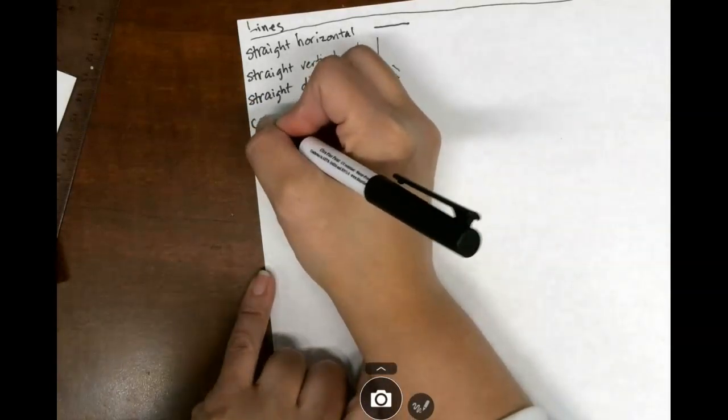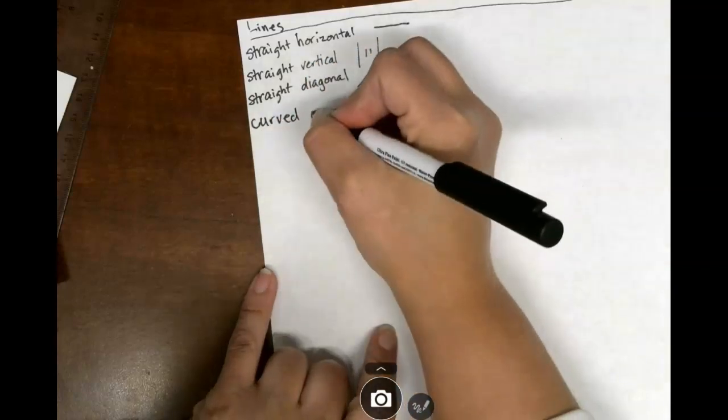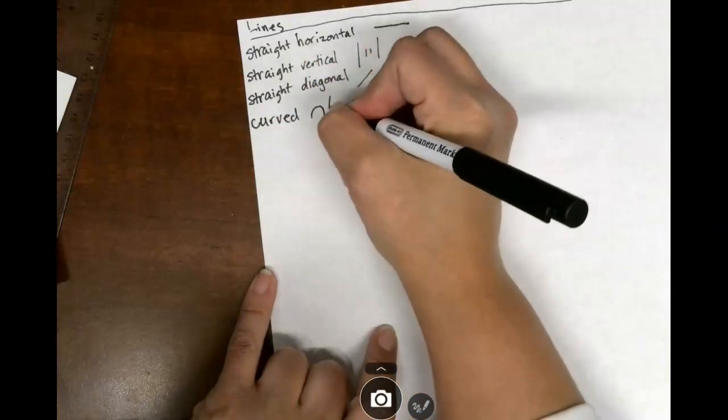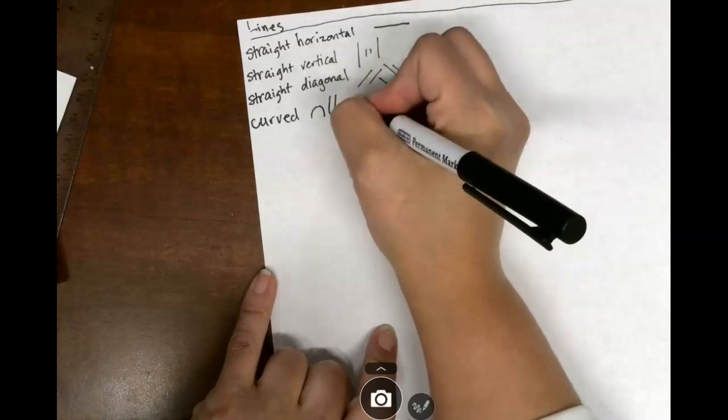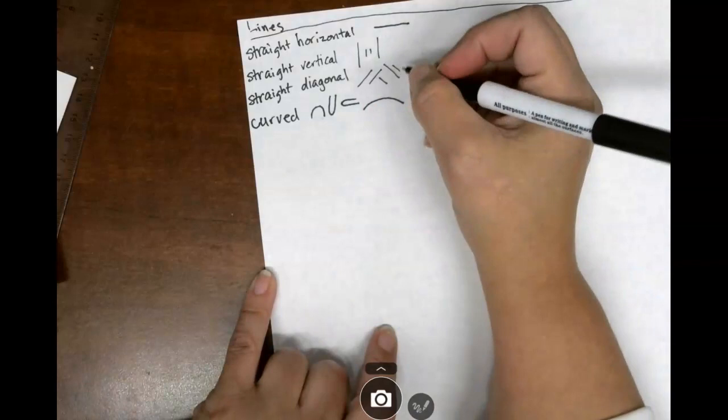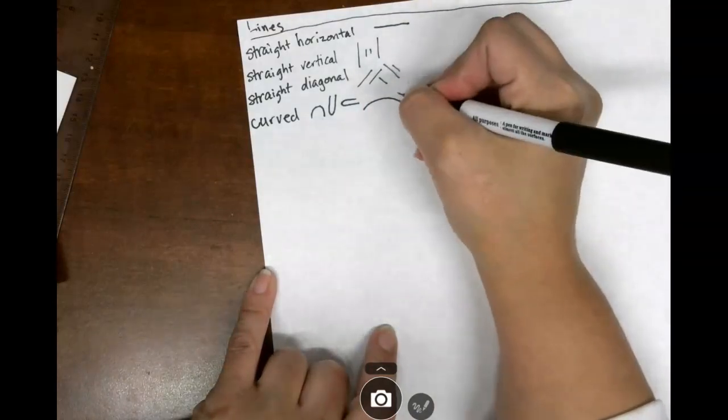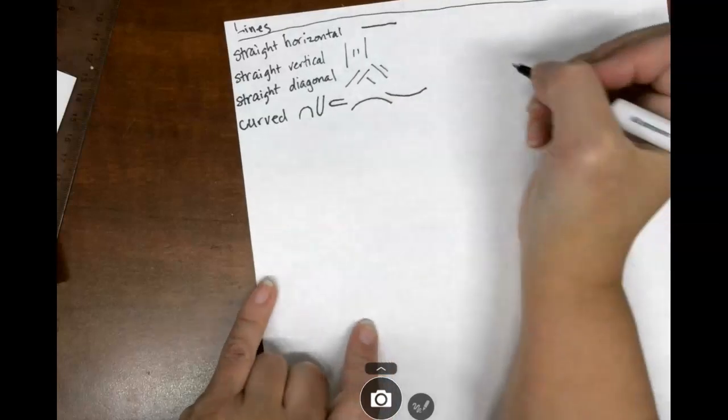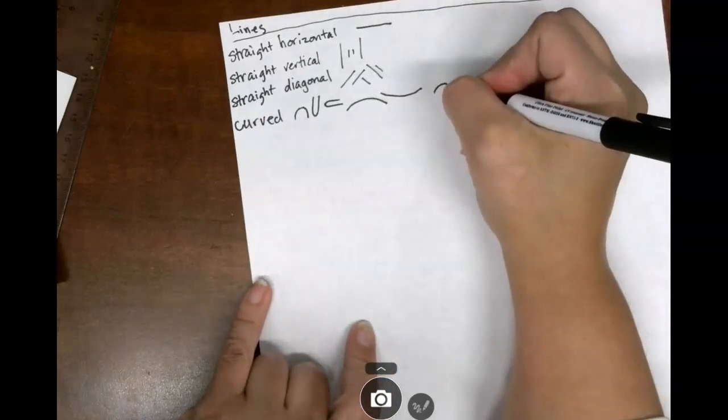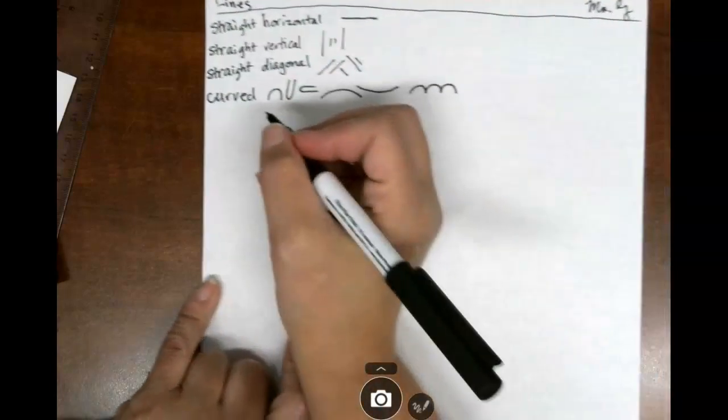So next one is a curved line, C-U-R-V-E-D, and it can have a little bit of multitude ways. It can be skinny, it can be long. It's all of those right there. Any of them are curved. When you put them together they look like little hills.